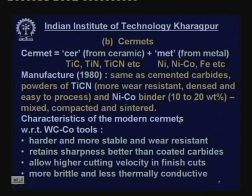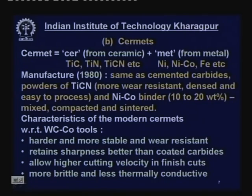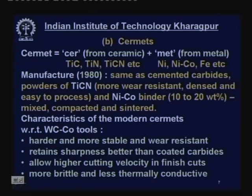Modern cermets are harder, more stable, and more wear resistant than carbide tools, but less hard than plain ceramics. They retain sharpness better than coated carbides, so accurate finish machining can be done better by cermets. They allow higher cutting velocities in finish cuts, though they are more brittle and less thermally conductive compared to tungsten carbide-cobalt tools, and so cannot be used in interrupted cutting or shock loading.